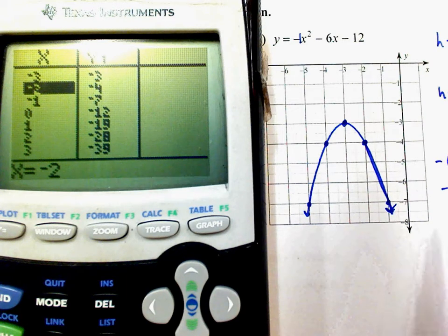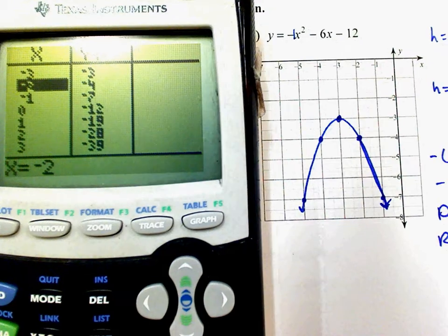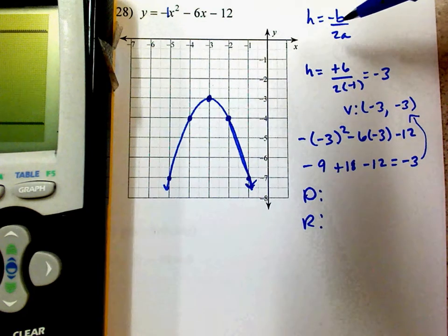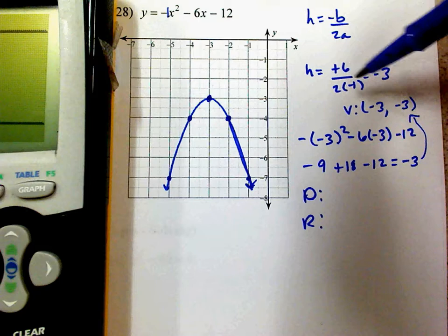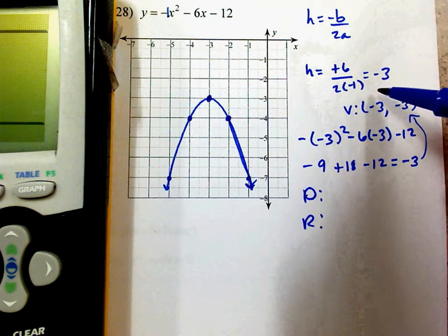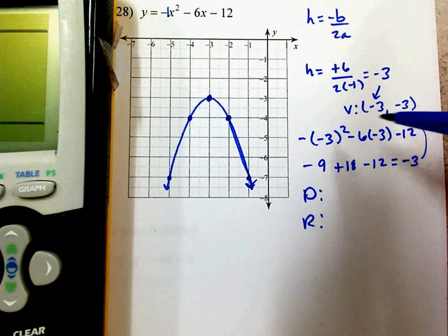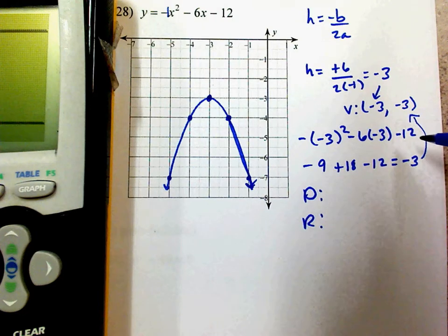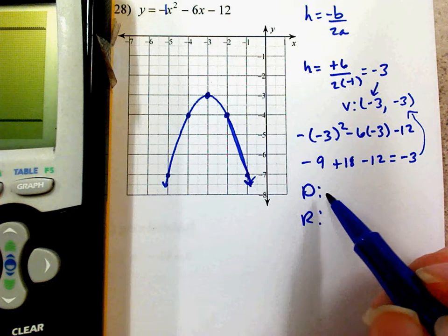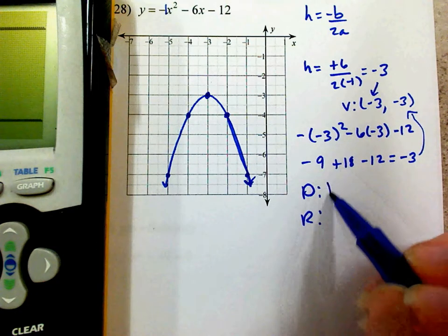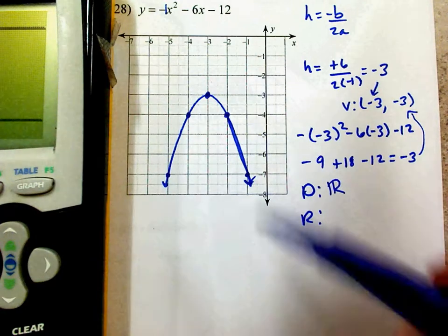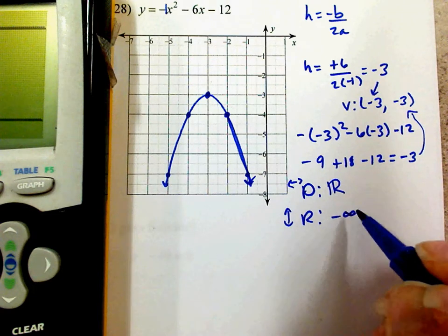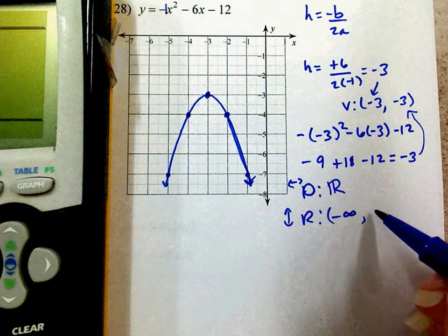As far as domain and range — domain is all real numbers since it goes all the way left and right. Range: the lowest it goes is negative infinity (parenthesis), and the highest it goes is negative 3, and it does reach it (bracket). So range is (negative infinity, negative 3].